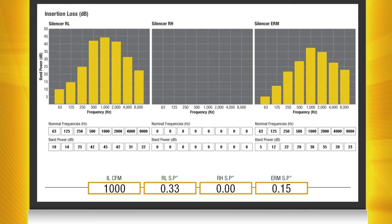With the RL silencer we're getting high insertion loss performance with a relatively high pressure drop and this has to do with the baffle configuration of that silencer.